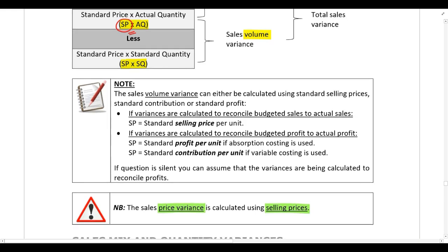You need to be careful with the sales volume variance because it can either be calculated using standard selling prices, standard contribution, or standard profit. If you are calculating variances to reconcile budgeted sales to actual sales, use selling prices. If variances are being calculated to reconcile budgeted profit to actual profit, you should use either the standard profit per unit or the standard contribution per unit.